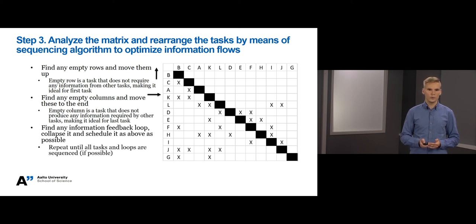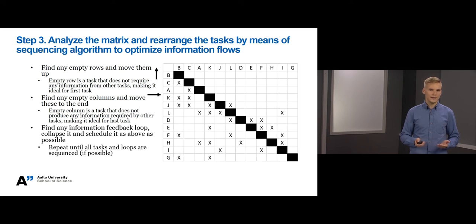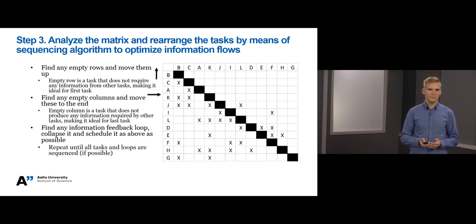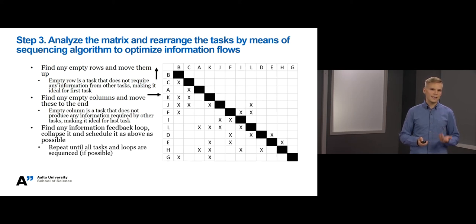Let's move forward. Next, we identify that task J provides information to tasks L and I. So let's move it up before tasks L and I. Next, we see that task I offers input for tasks L, F and H. Let's move it up before them. Now task F provides input for tasks I, D and E. Let's move it before them. As you can see, we are quite close to getting all cross marks below diagonal, but there are still some minor problems.